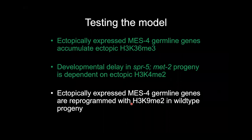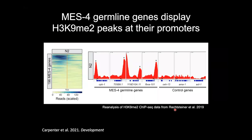Lastly, ectopically expressed MES4 germline genes that are reprogrammed should show evidence of H3K9 in wild-type L1 larvae. Lisa Petrella performed this ChIP-seq experiment and obtained beautiful data showing a subset of germline genes have H3K9 dimethyl promoter peaks. We reanalyzed this data in the context of MES4 germline genes, showing these genes have these H3K9 dimethyl promoter peaks — enriched in many of these genes but not all — and not seen at control genes. This provides evidence of reprogramming at these germline genes in wild-type L1 larvae.